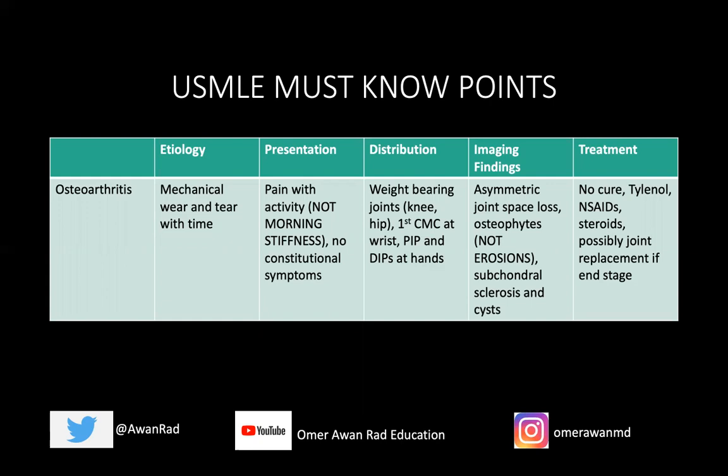The imaging findings: joint space loss is going to be typically asymmetric — like you saw in the knee, it involved the medial compartment more than the lateral or even the patellofemoral compartment. Now inflammatory arthritis like rheumatoid arthritis results in symmetric joint space loss, so the entire joint space is lost. But in osteoarthritis or degenerative arthritis, it's asymmetric joint space loss. The other major difference is you get osteophytes — production of more bone in the form of osteophytes — not erosions or loss of bone like we see in inflammatory arthritis.